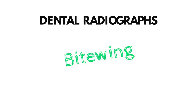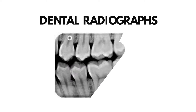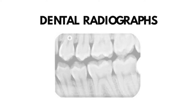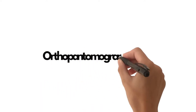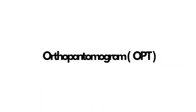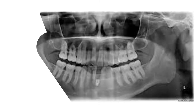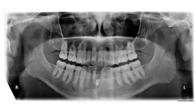And bitewing x-rays, which are used to observe potential decay in molar teeth. An orthopantomogram x-ray is a wide-view panoramic x-ray of the patient's upper and lower jaw, and associated dentition from root to crown in a single image, which is not possible with periapical or bitewing x-rays.